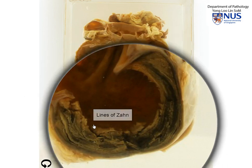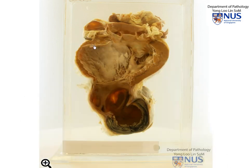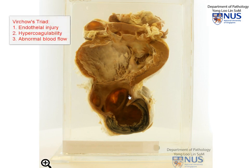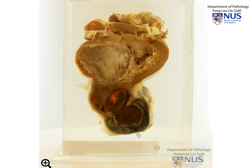The thrombus has formed within this aneurysm, and we do not see any thrombus elsewhere in the left ventricle. Why does the thrombus form here? This comes back to the etiology of thrombosis. One of the features that predisposes to thrombosis is turbulent or abnormal blood flow — one of the three components of Virchow's triad. In this case, because the blood is coming in and doing all sorts of irregular things within this aneurysmal dilatation, there is turbulence and abnormal direction, which gives rise to thrombosis.